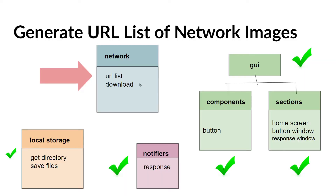We're going to generate the URL list of images from a free network site called LoremPixum. If you do have a camera, we will separate out this method so that you can switch between getting the URL list from the camera and getting test images from LoremPixum. Even if you do have a camera, it's good to use LoremPixum for test images — it may be more convenient. When the basic layout of the application is working, you can then pull the images from the camera instead.